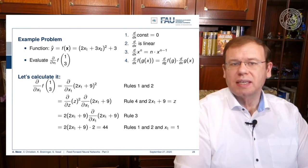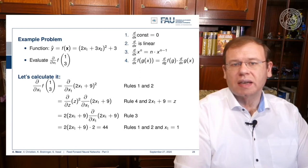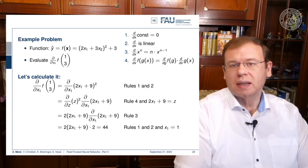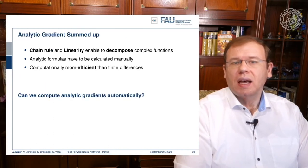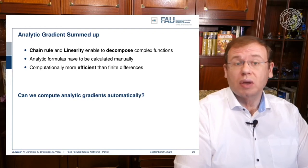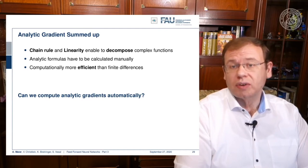We can simplify this a bit further. If we apply the partial derivative on the 2x1 plus 9, x1 cancels away, only 2 remains as the constant, 9 also vanishes. So in the end we end up with 2x1 plus 9 times 2. If you plug in x1 equals to 1, you will see that our derivative equals to 44. In our numerical implementation that we evaluated previously, we had 43.9999, so we were pretty close, but the analytic gradient is more accurate. Now the question is can we do this automatically? The answer is yes. We use those rules - the chain rule, linearity, and the other two - to decompose complex functions of neural networks. We don't do that manually but completely automatically in the backpropagation algorithm. This is going to be computationally more efficient than finite differences.